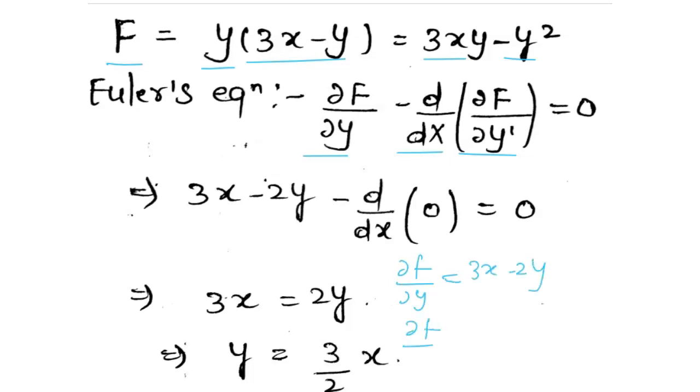So if we differentiate the functional with respect to y, the value is del f by del y equals 3x minus 2y. Similarly, del f by del y dash equals 0 because this function is independent of y dash. So if we apply Euler's equation for this condition where it's independent of y dash, we can get the answer for this question.